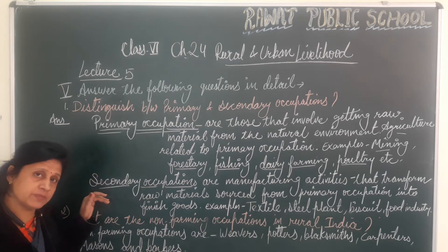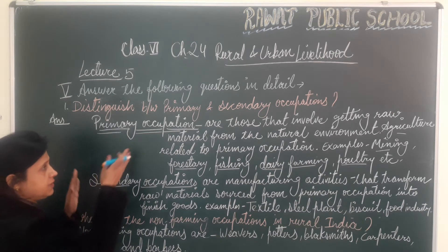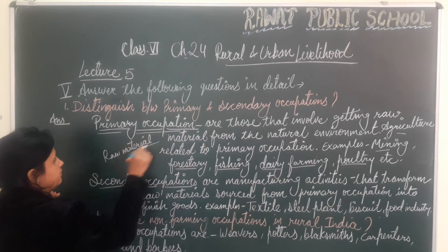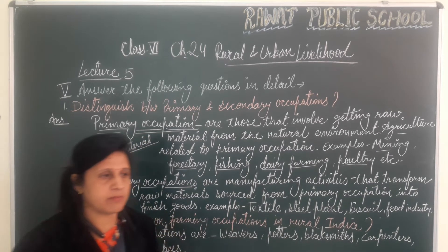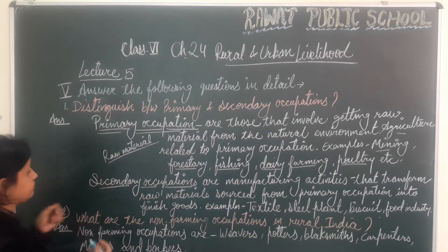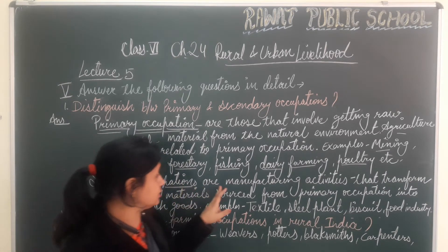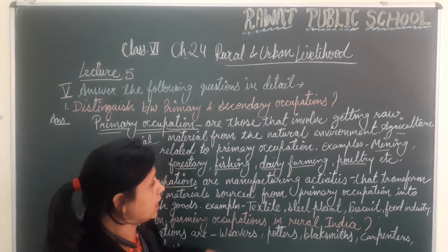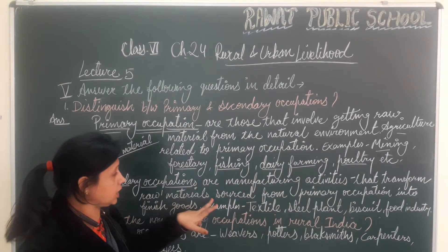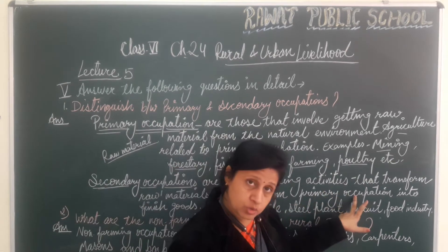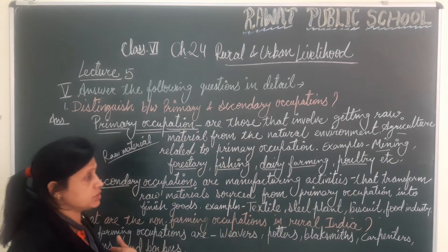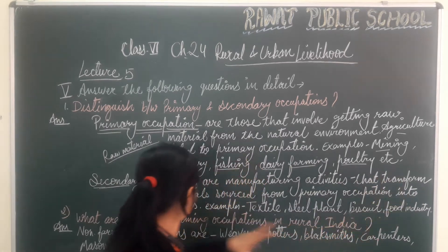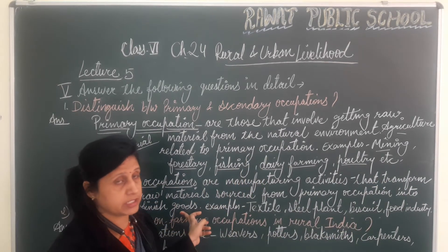Now we have to show the difference between primary and secondary. In primary, we produce raw material from the natural environment. Secondary occupations are manufacturing activities. In manufacturing, things are made that transform raw material sourced from the primary occupation. The raw material from the primary sector is used to transform into finished goods.